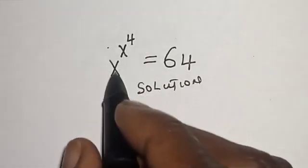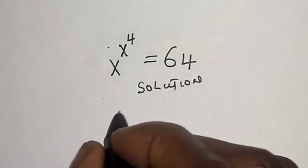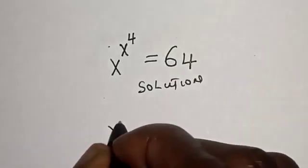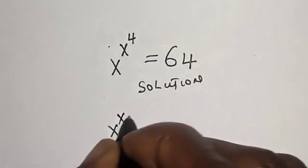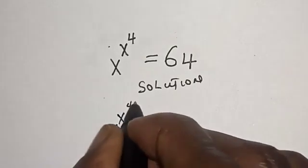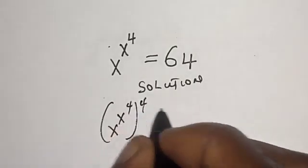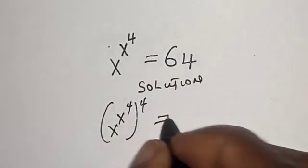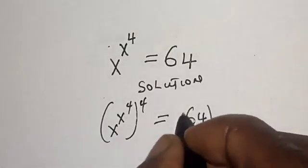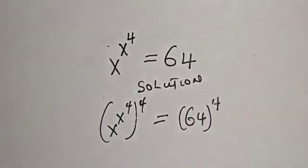Let's multiply the power of both sides by 4. That is s raised to power s raised to power 4, all raised to power 4, is equal to 64 raised to power 4.